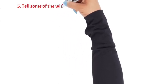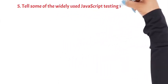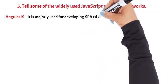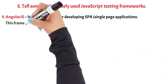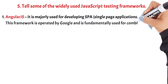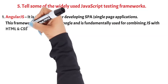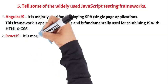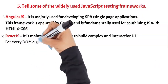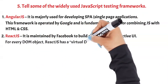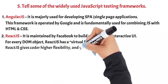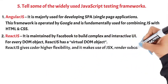Question 5: Tell some of the widely used JavaScript testing frameworks. 1. AngularJS — majorly used for developing SPA (single-page applications). This framework is operated by Google and fundamentally used for combining JavaScript with HTML and CSS. 2. ReactJS — maintained by Facebook to build complex and interactive UI. For every DOM object, React has a virtual DOM object, giving coders higher flexibility and making use of JSX to render subcomponents.